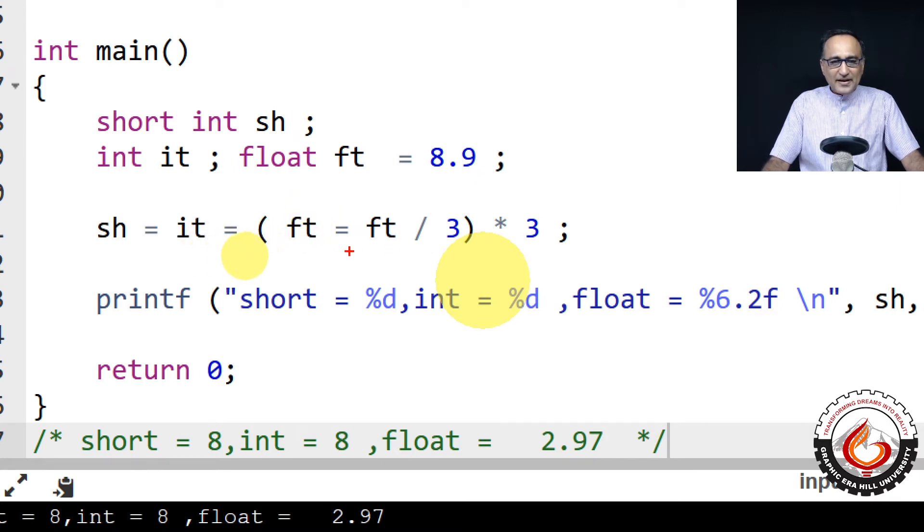Then in the bracket I have said float is float upon 3. Now what happens is 8.9 upon 3.0, which comes to something like 2.66. This particular value is going to be 2.8 or 2.9 or whatever is that particular value.